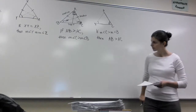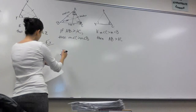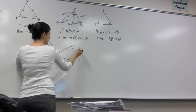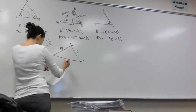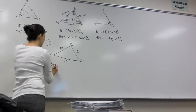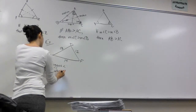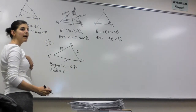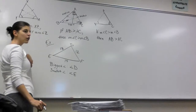Let's do some examples, because sometimes things make more sense with numbers than with just theories. You have triangle DEF on your paper. DE is 13, DF is 12, and EF is 14. What's the biggest angle and what's the smallest angle? The biggest angle would be angle D — correct — because it's across from the biggest side, EF which is 14. Angle E is the smallest, because it's across from the smallest side, DF which is 12.